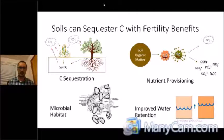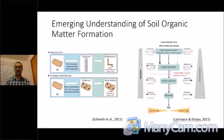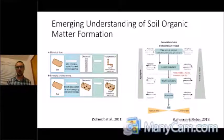Soil organic matter is also linked with improving water retention, which can be very important for cropping systems. So we can not only achieve carbon sequestration benefits but also benefit soil fertility as well. Thinking about how soils are actually formed and how this is preserved leads us to look at some emerging understanding of how soil organic matter cycles.